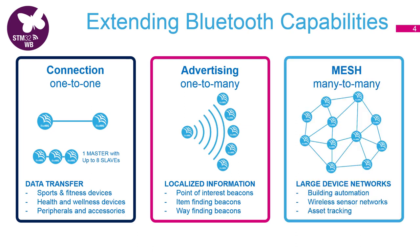So what is Bluetooth mesh? The topology is many-to-many — something in between connection and advertising. It's based on a mechanism called flooding, where most of the nodes which are part of the mesh network are always listening and broadcasting back every packet they receive. By repeating the message, the radio range is extended, which allows building quite large networks.